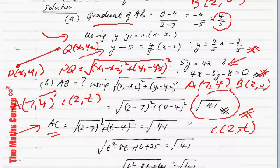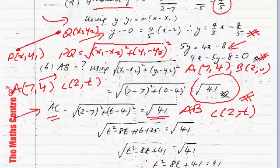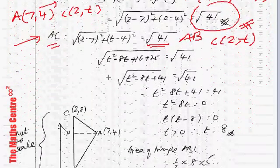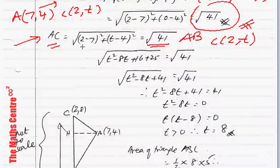Square root of (2-7) squared plus (T-4) squared. And you know they gave us AC equals AB, and we found AB is square root of 41. So this one here is AB. All you have to do is clean up the algebra. Follow carefully.